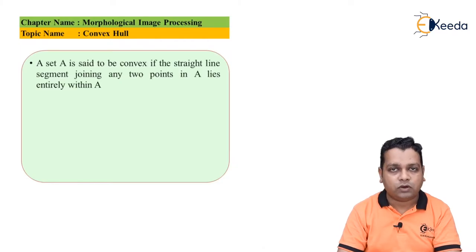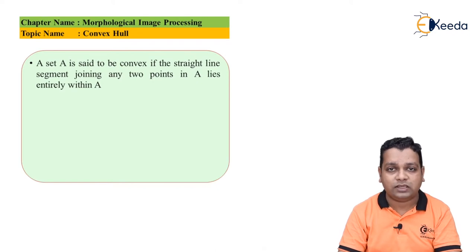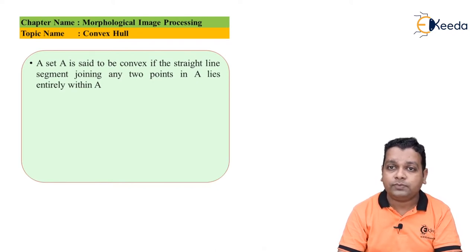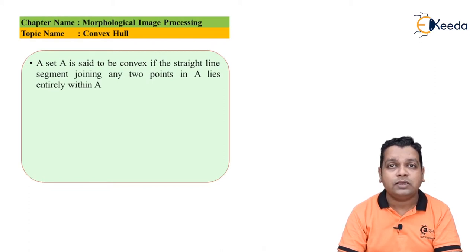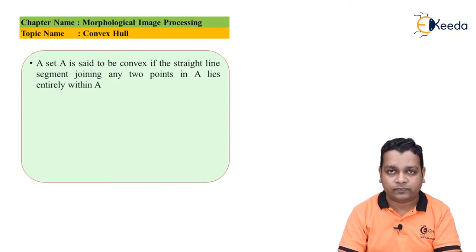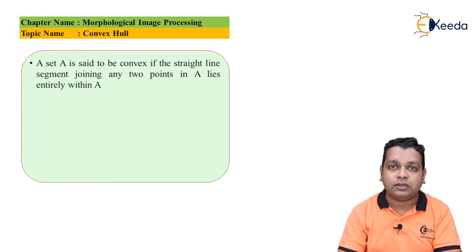Here we start with our topic. We let a set represented by capital A. It is said to be convex if the straight line segment joining any two points inside this set A lies entirely within set A. This definition is very much important as we address this particular topic.